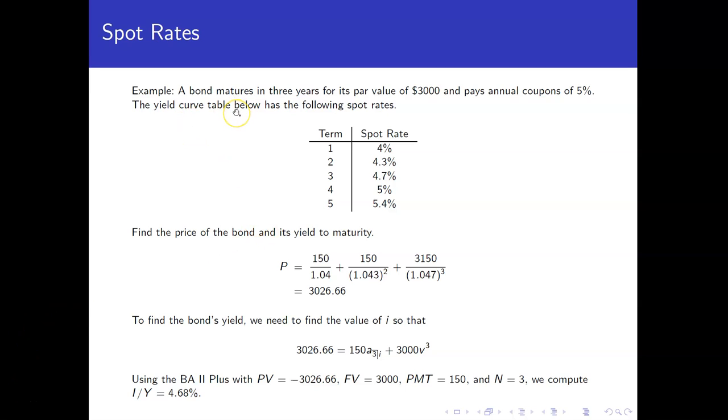We're given a yield curve table that gives us the 1, 2, 3, 4, and 5 year spot rates. And here are your percentages for those.